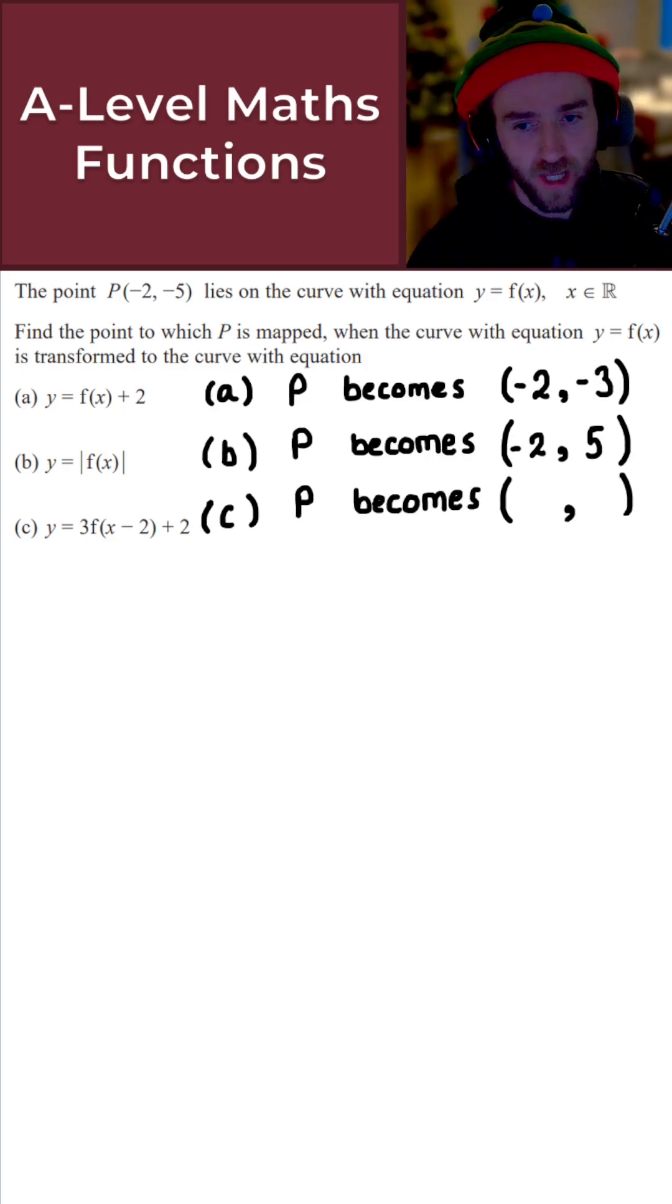Finally, for part C, we need to be slightly careful because I've actually got 3 individual transformations. I've got the 3 on the outside, that's a stretch. I've got the -2 inside the bracket and the +2. So the -2 and +2 are translations. The order does matter. I'm going to apply the stretch first and then apply the translations.